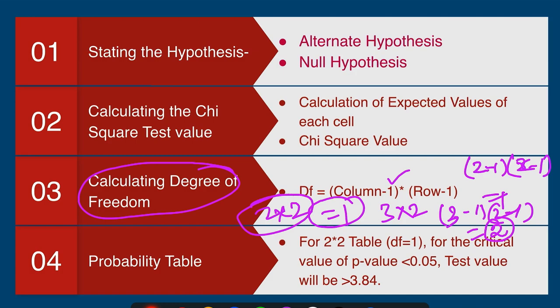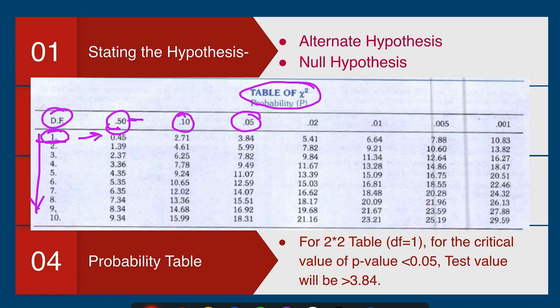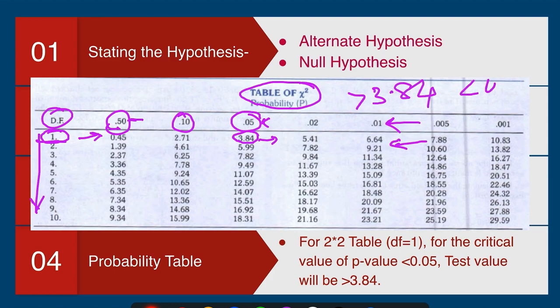The fourth important step is interpreting the probability value using the probability table. This is the chi-square probability table where you can see the degree of freedom increasing from 1 to 10 and the p-values such as 0.50, 0.10, and 0.05. We all know 0.05 is the critical point for significance — below which we say there is a significant association, and above which there is no significant association. For the 0.05 level, the chi-square value is 3.84. If you get a chi-square value greater than 3.84, your p-value will be less than 0.05.